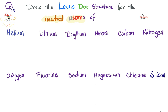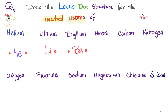Helium: draw He, two valence electrons — place them together on top for neatness. Lithium: Li, one valence electron, just one dot. Beryllium: Be, two valence electrons, one on each side. Neon: 8 valence electrons — go one, two, three, four placing singles first, then pair them up: five, six, seven, eight.